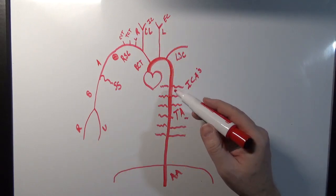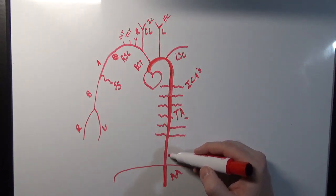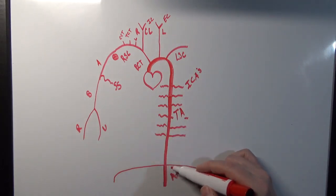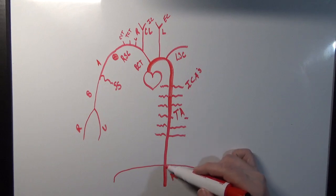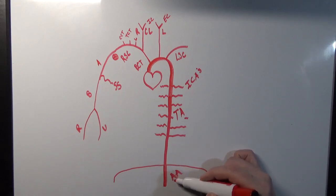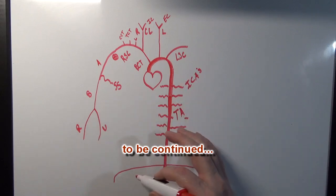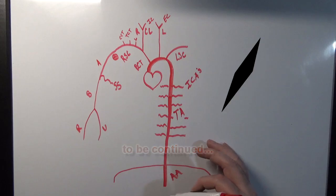We'd follow the thoracic aorta down to the diaphragm, and remember once it passes through the diaphragm, the name is going to change to the abdominal aorta. I'm going to erase this picture and continue drawing the lower part.